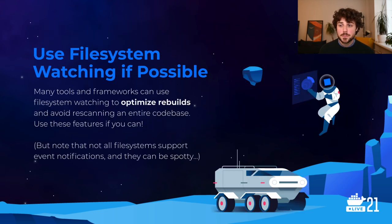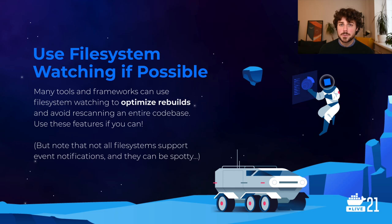If you can use file system watching with tools, that's great because it takes linear scaling behavior and makes it constant-time behavior in terms of having to reprocess files when they change. If a tool knows exactly which files have changed, it doesn't need to rescan or reread the entire codebase directory hierarchy to do its rebuild. Not all file systems support event notifications, so check that before you spend a day wondering why things aren't rebuilding — but most of them do, and most tools do as well.